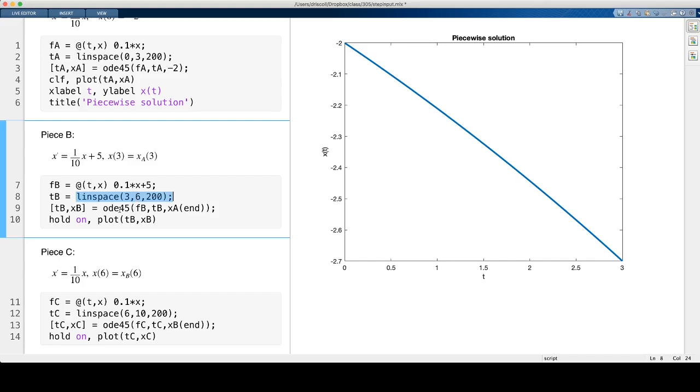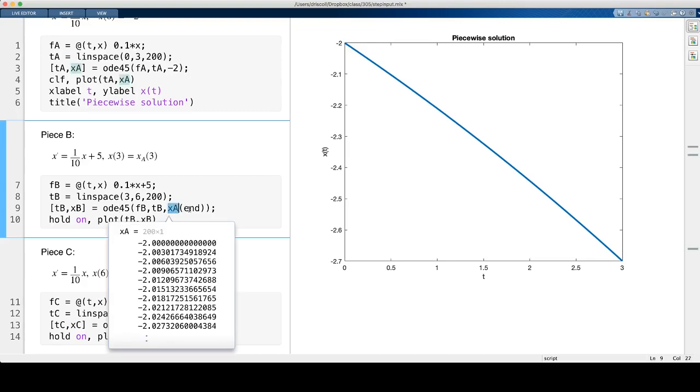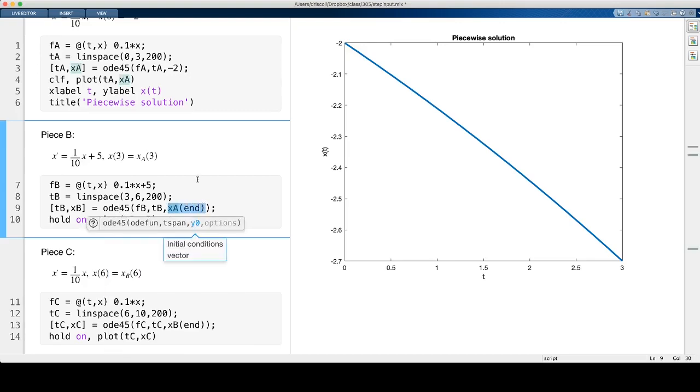I want to solve this piece at times between 3 and 6. And then specifying the initial value for this segment is a little bit tricky because mathematically what I want is the value of the solution xa at the time t equals 3. And if we were writing that on paper, we would write xa parentheses 3. But in this program, that would be the third element of a vector xa. That's not what I want, because that would be some early time close to 0.